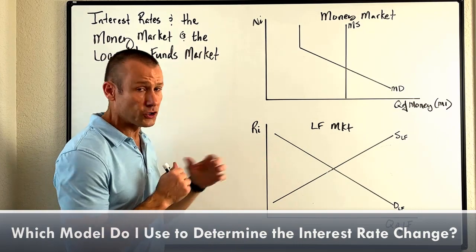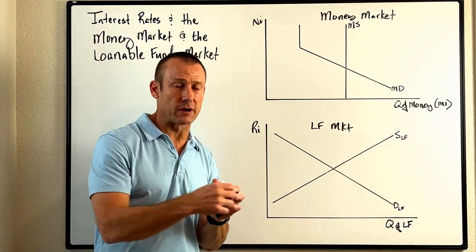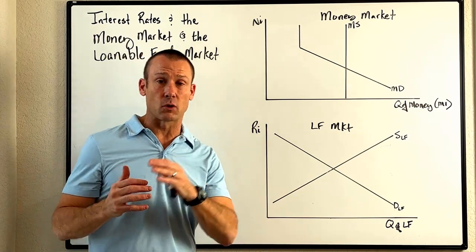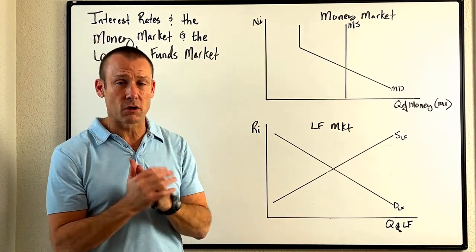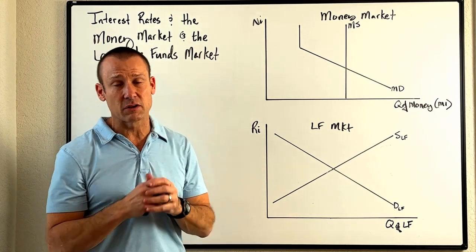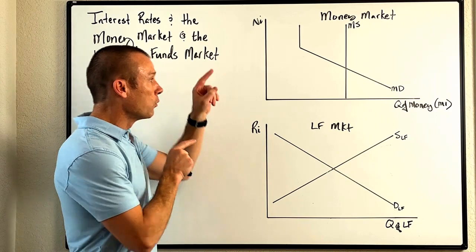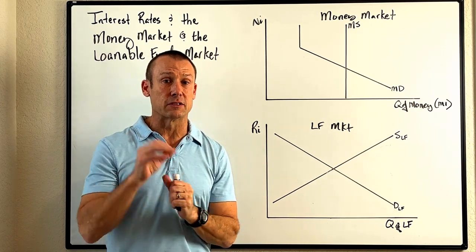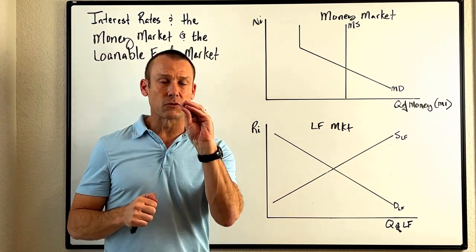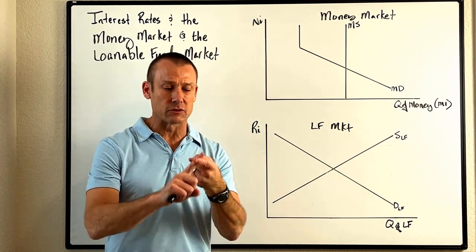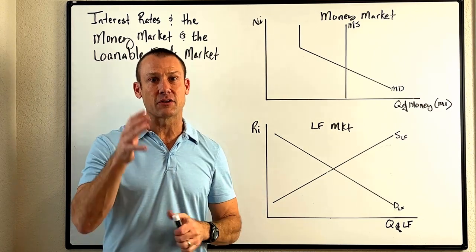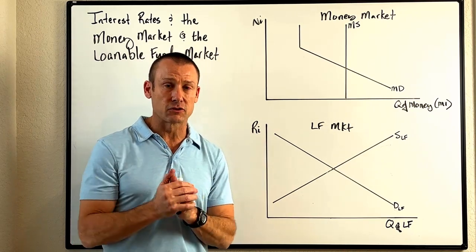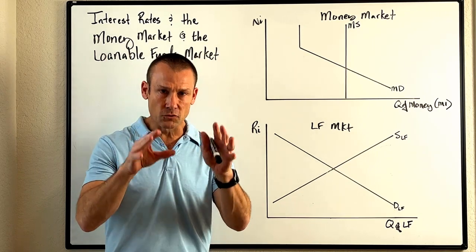When things happen in our economy — say household savings changes, there are capital inflows, business wants to invest more, the deficit changes, the Fed does monetary policy, or the price level goes up — which model should I go to to find out what's happening to the interest rate? The interest rate is super important in macroeconomics because when it changes, consumption, investment, and net exports change, which changes aggregate demand, which changes the price level, real GDP, and hiring.